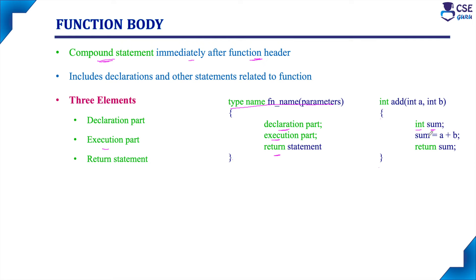In the first part — the declaration part — whatever variables are used in the user-defined function must be declared here. After that, the execution part starts: whatever statements are required to execute the function are included here. In this example, 'sum = a + b' is the execution part. Finally, the last statement in the body is the return statement. If it returns a value, the return statement should accompany that value. If it does not return any value, simply write the keyword return followed by a semicolon. Note that only the function header should not end with a semicolon; all other statements must end with a semicolon.